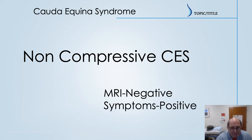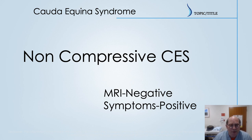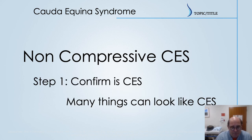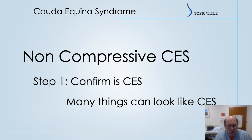Now more specifically, non-compressive cauda equina syndrome is MRI-negative and symptom-positive, to put it shortly. We've got cauda equina syndrome defined as impairment of the nerves within the cauda equina — a large portion caused by discs, trauma, or structural issues. The non-compressive or scan-negative ones are those that fulfill all the criteria for cauda equina syndrome but don't have a structural lesion visible on MRI. Step one is to confirm that it's actually cauda equina — you've got bladder dysfunction, leg weakness and numbness — but is it really cauda equina, or something else that just looks like it?